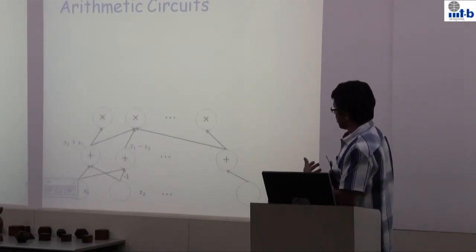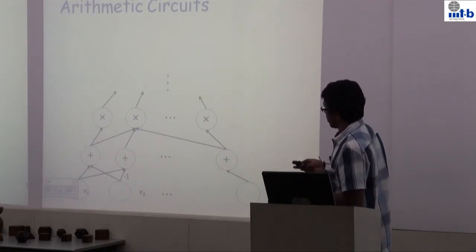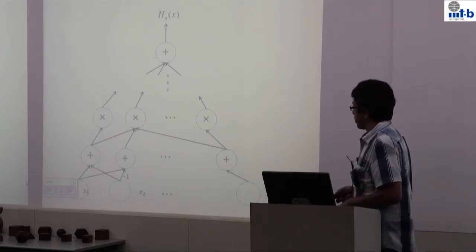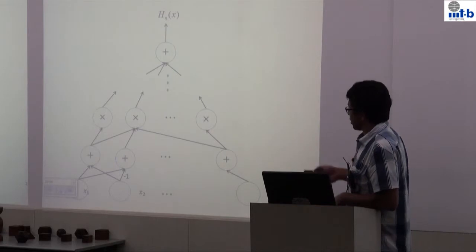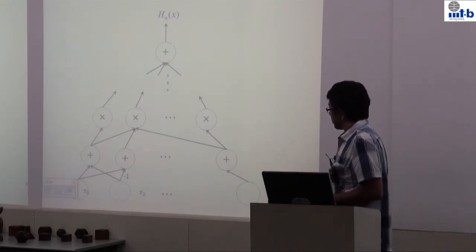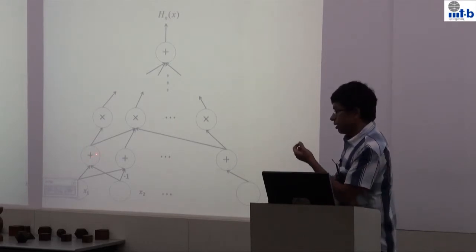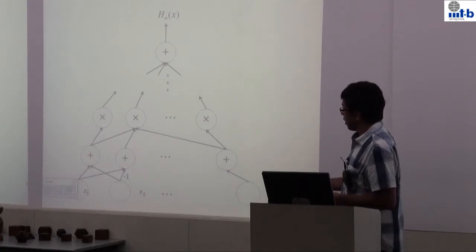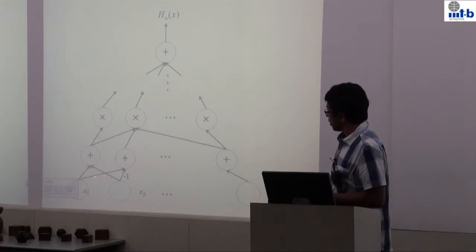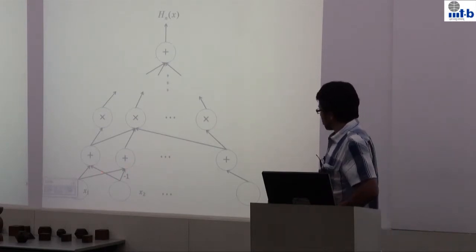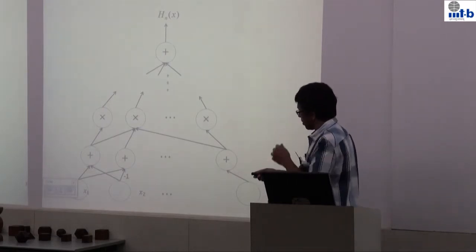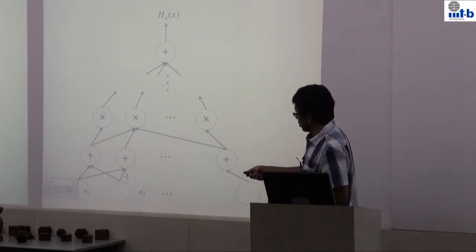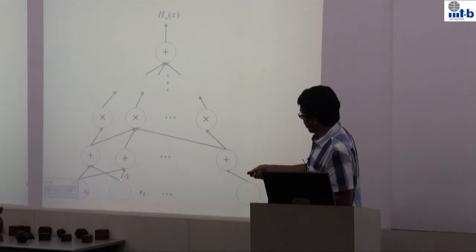We can represent this computation as a graph. The input nodes at the lowest level are x1 through xn. Each node in the graph represents a line of the straight line program and takes two inputs. For subtraction, we dispense with it by allowing constants as edge labels — for example, a minus-1 label on an edge going into a plus node, so that plus node computes one input minus the other.